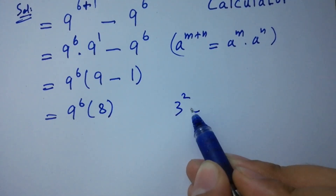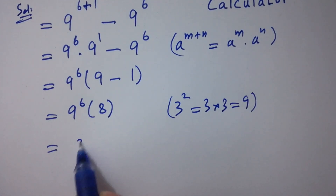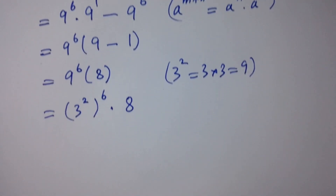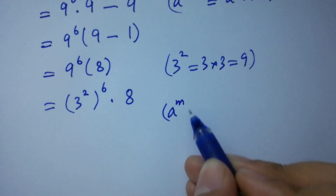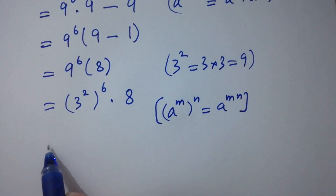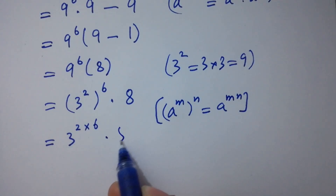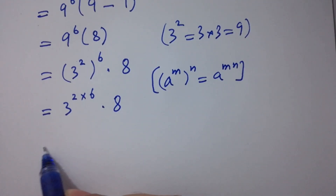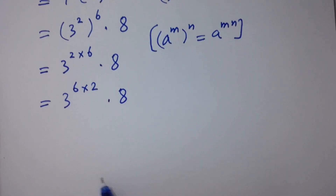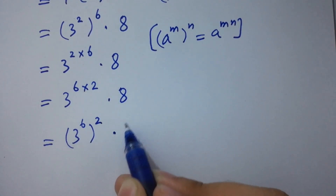Since 9 equals 3 squared, we can write 9 to the power 6 as 3 squared to the power 6, times 8. Using the rule a to the power m to the whole power n equals a to the power m times n, this becomes 3 to the power 2 times 6, which is 3 to the power 12, times 8. This can also be written as 3 to the power 6, to the whole power 2, times 8.